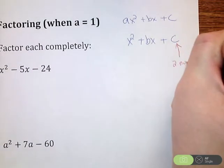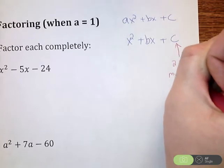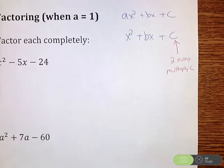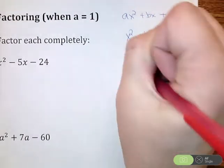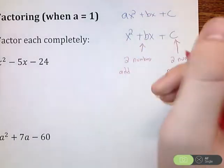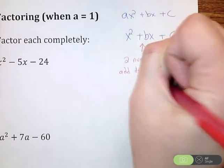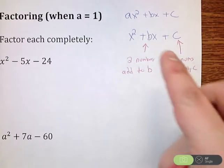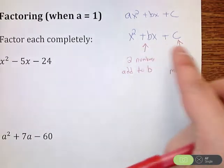So two numbers that multiply to c, but those same two numbers need to add to b. So we're looking for two numbers that multiply to c, those same two numbers need to add up to be b. And b and c are just numbers.